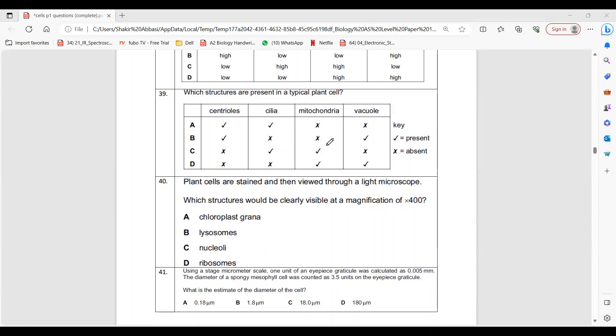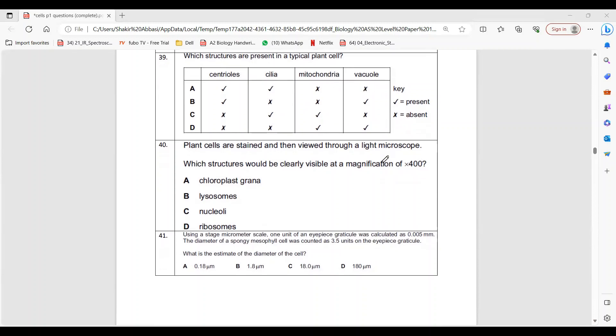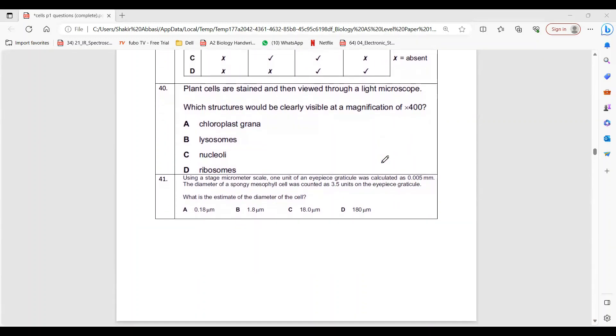Question 39: Which structures are present in plants? Plants do not have centrioles, they do not have cilia, but they do have mitochondria and vacuole. Delta. Last question is 40, which says which structure would be clearly visible with magnification of 400. You can guess that this is the biggest of all. So charlie is the right answer. Bye bye.